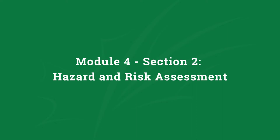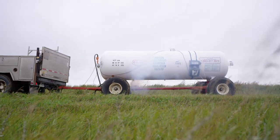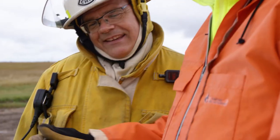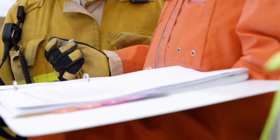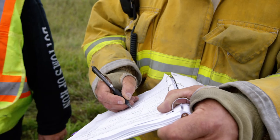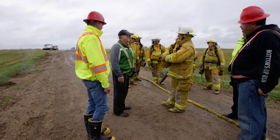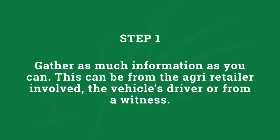Remember your priorities in an agricultural incident involving anhydrous ammonia: people are first, then the environment, and finally property. Work with the technical advisors identified in the ERAP, the local agri-retailer, or manufacturer. To properly identify the hazards involved and assess the risk, gather as much information as you can — from the agri-retailer involved, the vehicle's driver, or from a witness. Determine a timeline of the incident, what is the presumed cause, determine if anyone is hurt, how much product is involved, and the condition of the vessel.